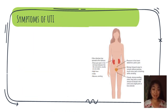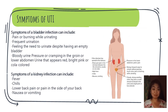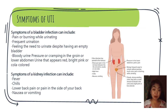The symptoms of bladder UTI include pain or burning while urinating, frequent urination, feeling the need to urinate despite having an empty bladder, blood in the urine, and pressure or cramping in the groin or lower abdomen. Urine may also appear dark red, bright pink, or cola-colored.